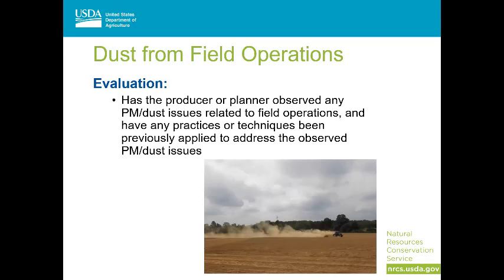The next three components specifically address dust and therefore the particulate matter resource concern. Field operations such as tillage, planting, and harvesting can obviously create dust emissions. Although there have been some attempts at quantifying dust emissions from these operations, the main concern here is nuisance dusting issues and also potential impacts on local visibility and safety. In our evaluation, if the producer or the conservation planner haven't observed any dust issues related to field operations — including complaints from neighbors — or if any conservation practices or techniques have been applied to address previous dust issues, we're going to say that you don't have a resource concern for this component. If there are dust issues, there are several NRCS conservation practices we can apply depending on what is creating those dust issues.